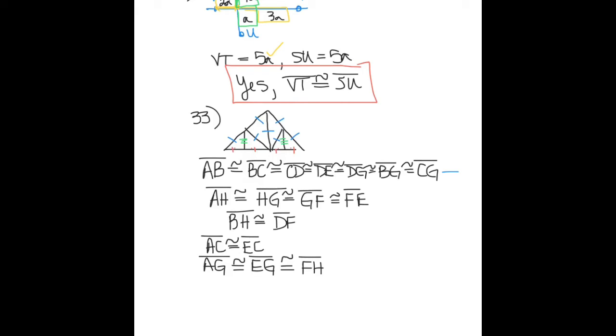Then I marked all the red segments. So segment HA is congruent to segment HG is congruent to segment GF is congruent to segment FE. These are all of the red segments. And then I did all the green segments—segment BH is congruent to segment DF.